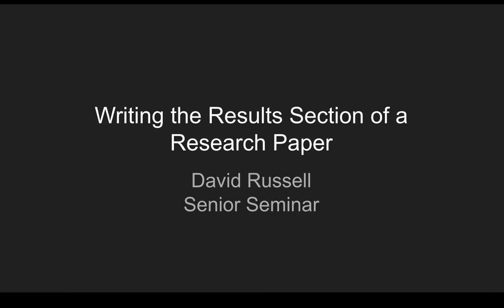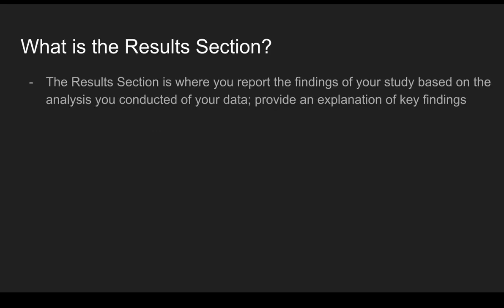We're at the point in the semester where we're going to begin writing the results section of our capstone papers. I wanted to talk about how to approach writing a results section for a research paper. We'll go over some of the basics and what you want to accomplish within this section. The results section is where you report the findings of your study, based on the analysis you conducted of your data, whether that's survey data, qualitative interviews, or an analysis of social media. You want to convey the key findings from your analysis to the reader, accomplished through both text as well as tables and figures that accompany the narrative you write.